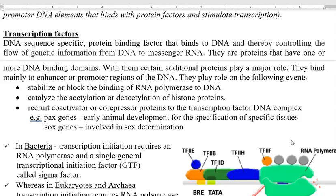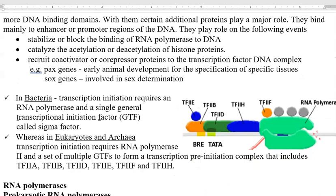Transcription factors play a large role in Hox genes involved in early animal development for specification of specific tissue formation, and they are associated with Sox gene expression involved in sex determination of an organism. There is a difference between transcription factors of bacteria and eukaryotes. In bacteria, transcription initiation generally requires RNA polymerase and a single general transcription initiation factor, referred to as GTF or sigma factor.